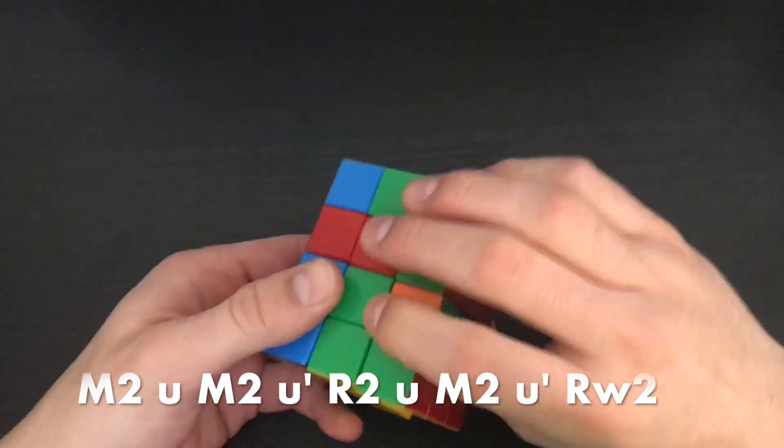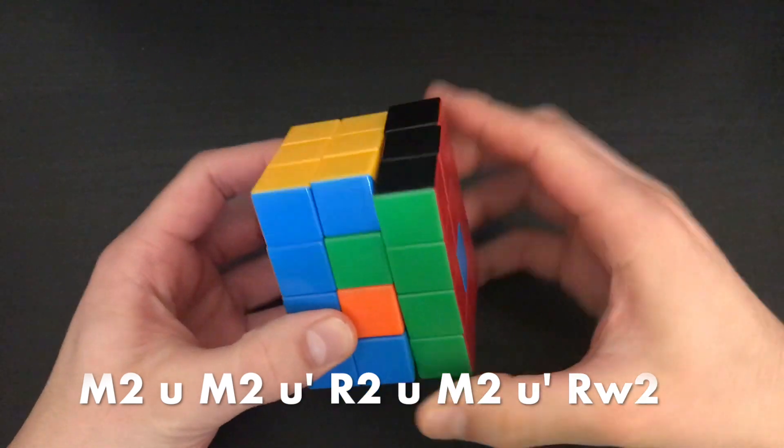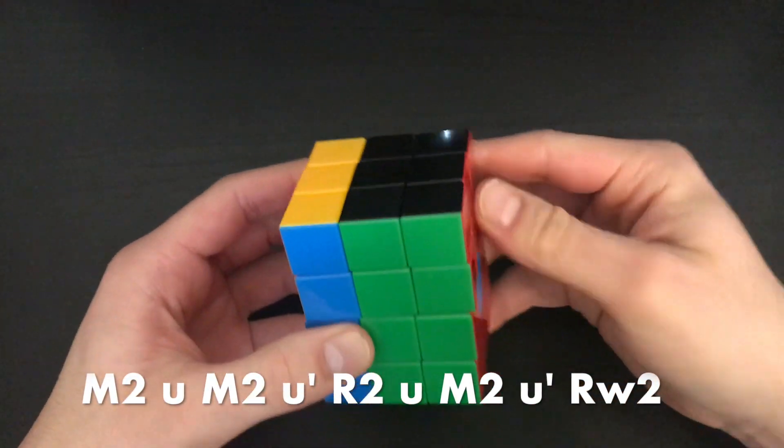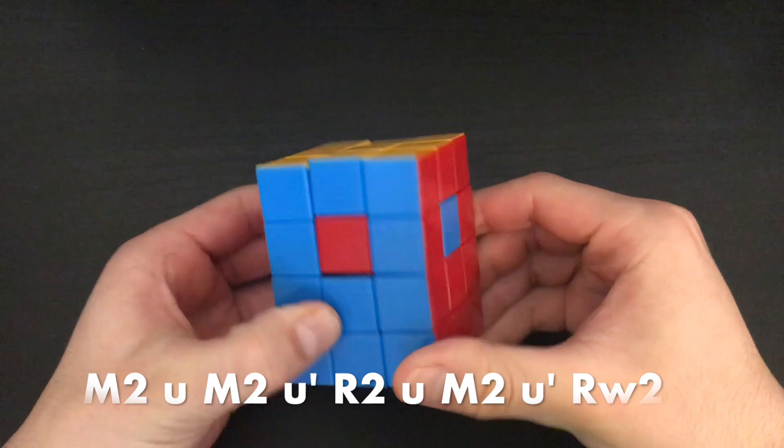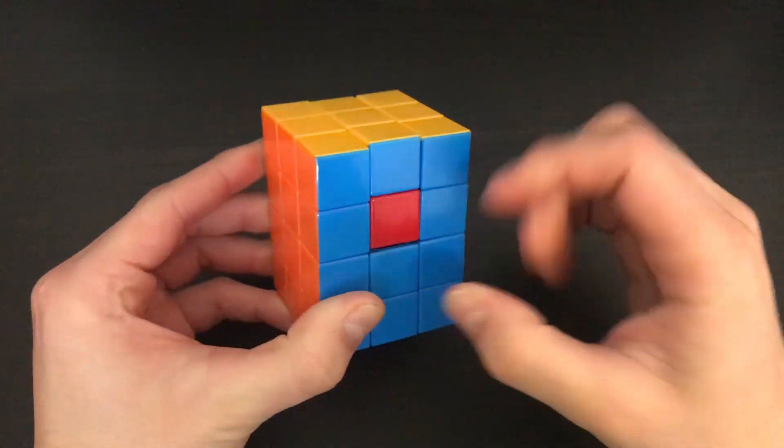M2, little u, M2, little u' R2, little u, M2, little u' RY2. You can also mirror this on the left side.